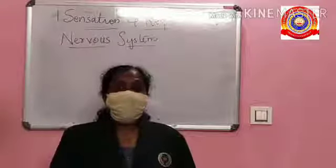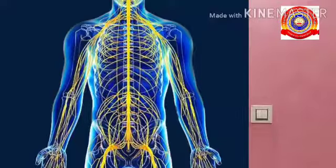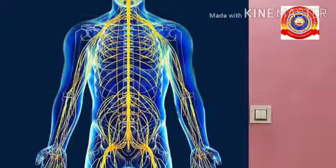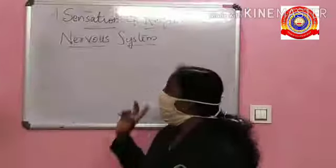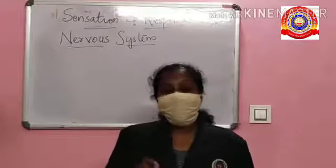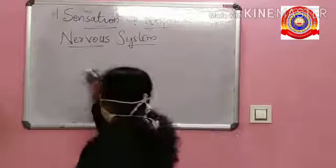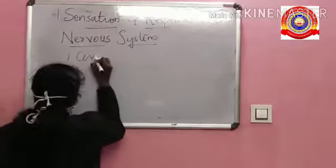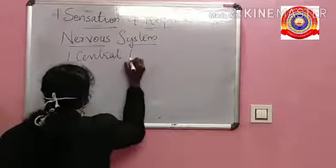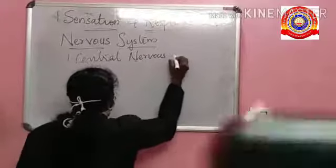Today our topic is the nervous system. The nervous system controls and coordinates all the life activities in our body. The nervous system is classified into two: central nervous system (CNS) and peripheral nervous system (PNS).